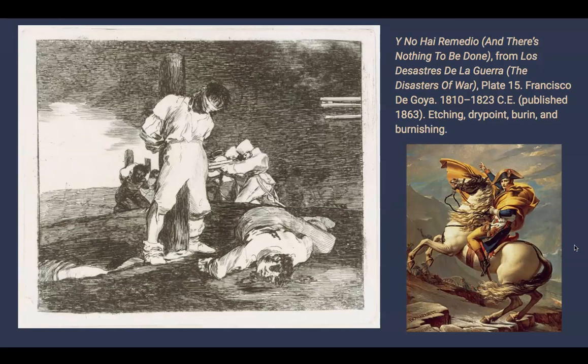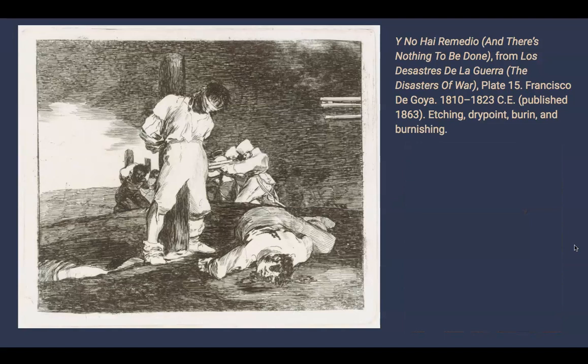Goya witnessed the destruction wrought by both Napoleonic forces and Spanish forces against each other, civilians, and the landscape itself. There is no glory in war as depicted by Goya, unlike what we saw in David's Oath of the Horatii. There is only the certainty of endless death carried out by anonymous soldiers on anonymous victims. In fact, the soldiers become little more than the weapons they carry, as attested by the unforgivingly straight lines of gun barrels that pierce the right side of the composition. The title only adds to the hopeless despair of the scene: There is nothing to be done. Humanity is caught in a nightmare of its own making where the light of logic and reason cannot reach.